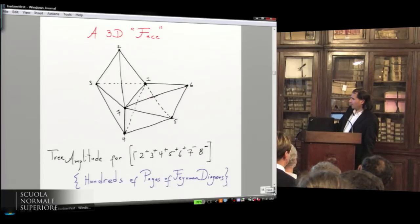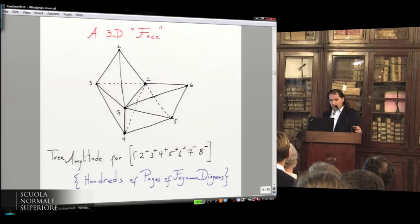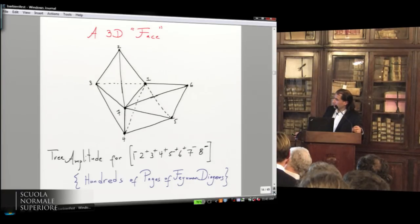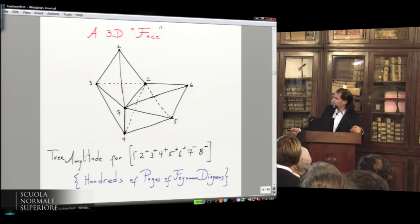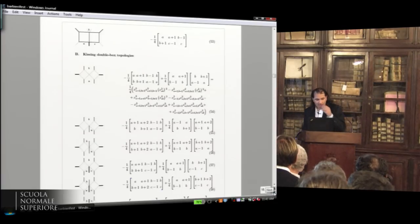Just so you have a picture, the amplituhedron in general lives in a very high-dimensional space. But just so you see that it's something concrete, here's a particular three-dimensional face of the amplituhedron that actually, in this case, literally computes the scattering amplitude for that particular helicity configuration of gluons. And that's hundreds of pages of Feynman diagrams.